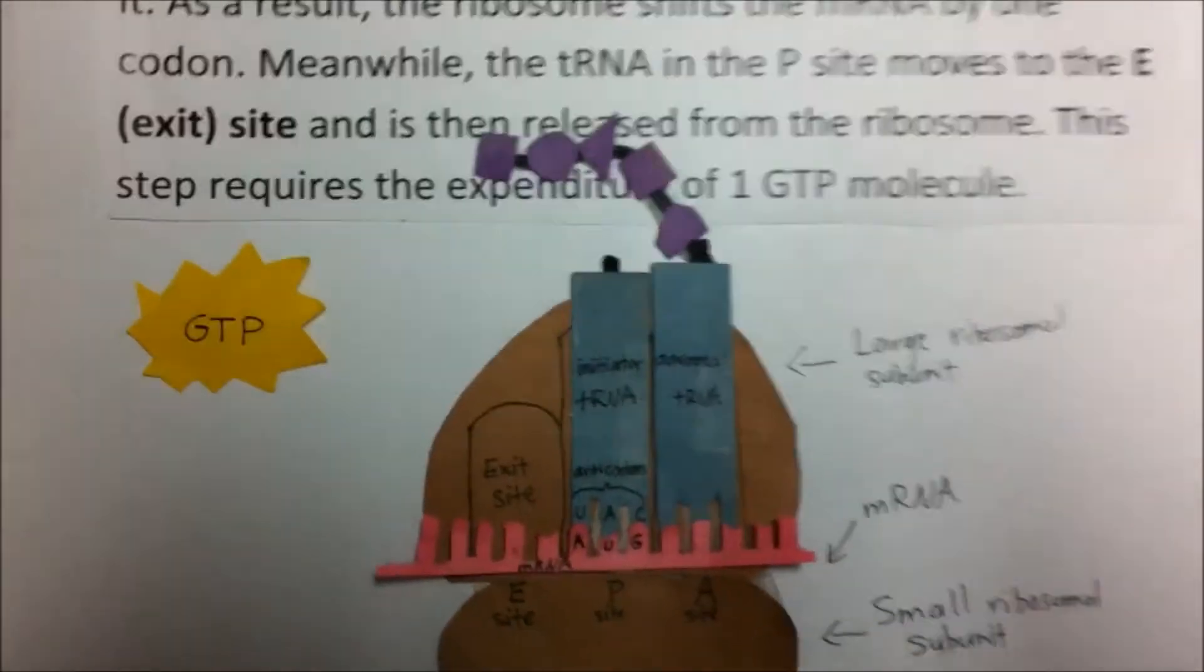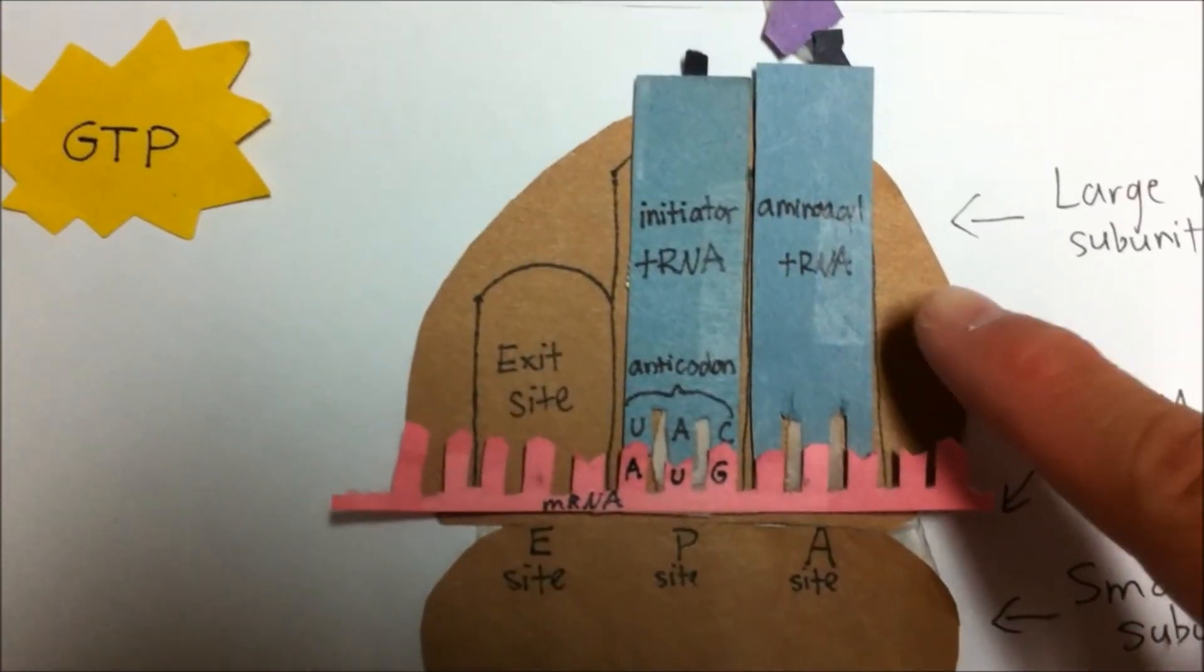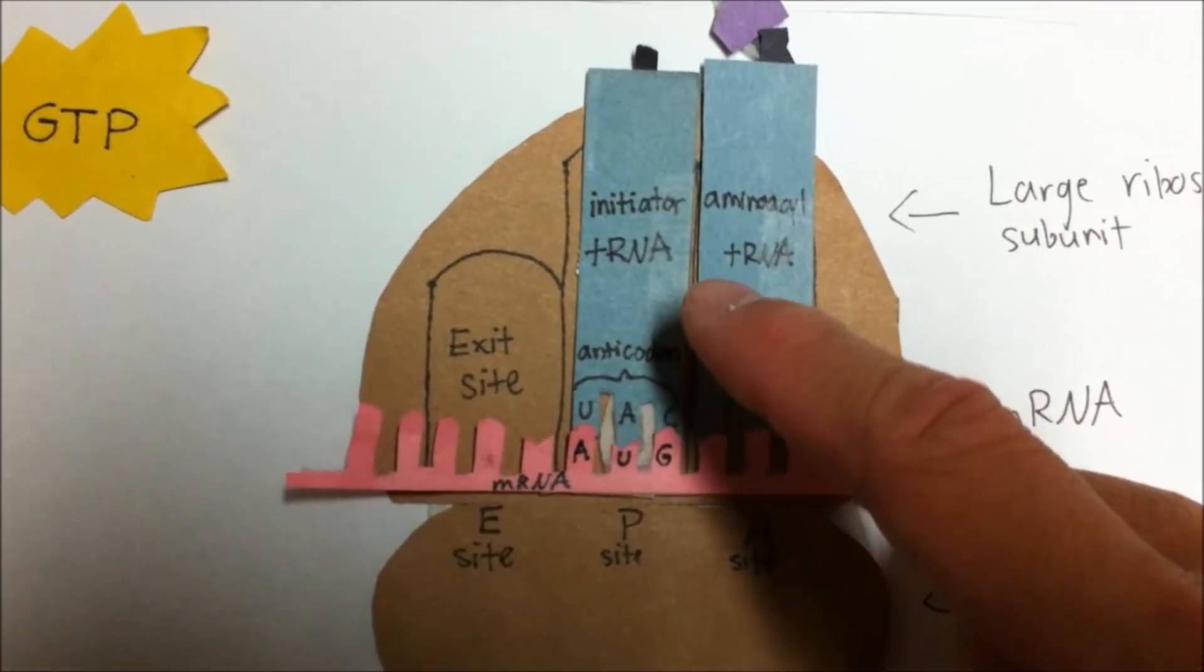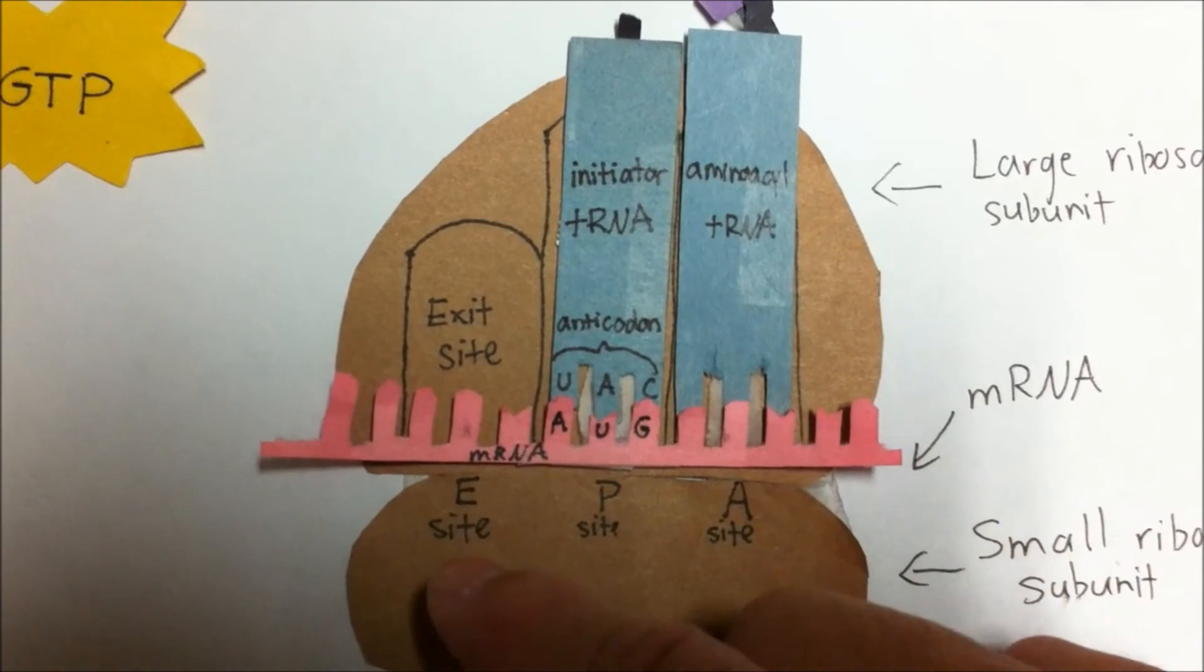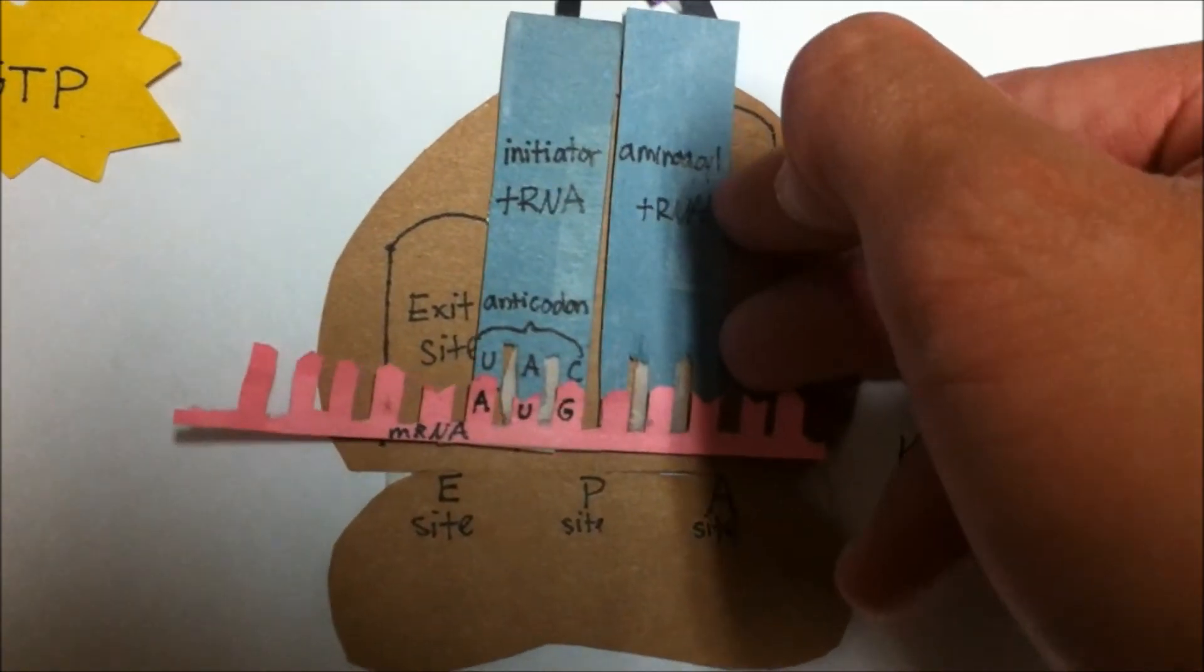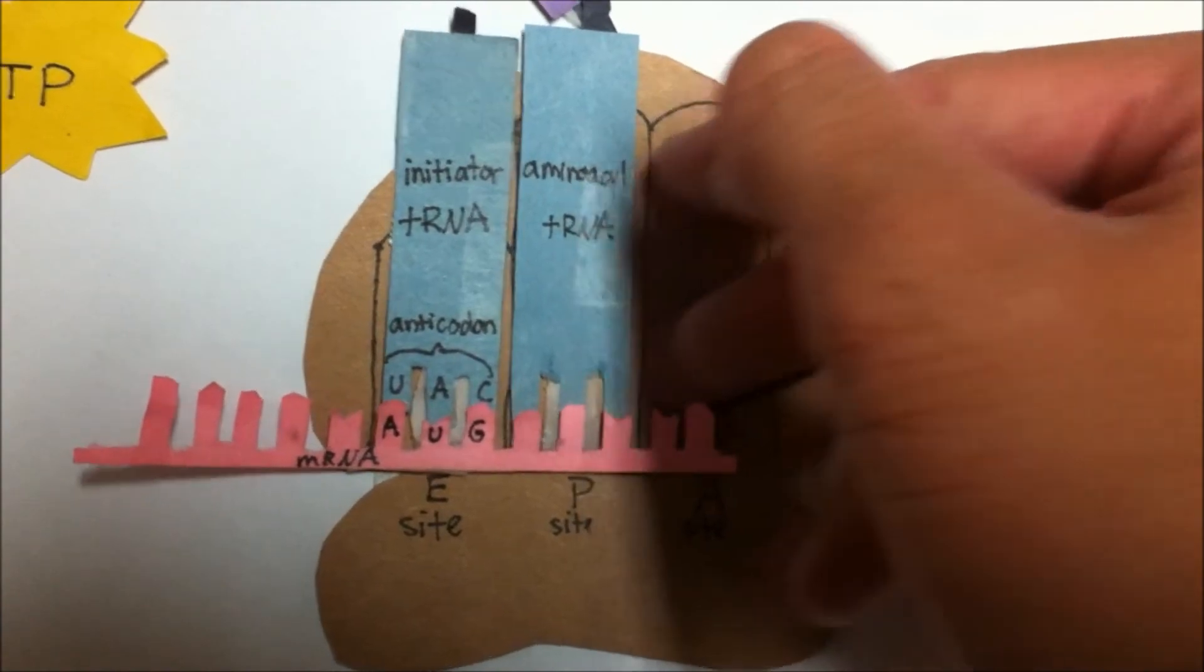The final step is translocation, where the tRNA in the A site is moved to the P site, and the tRNA in the P site is moved to the E site, also known as the exit site. And as a result, the ribosome shifts on mRNA by one codon.